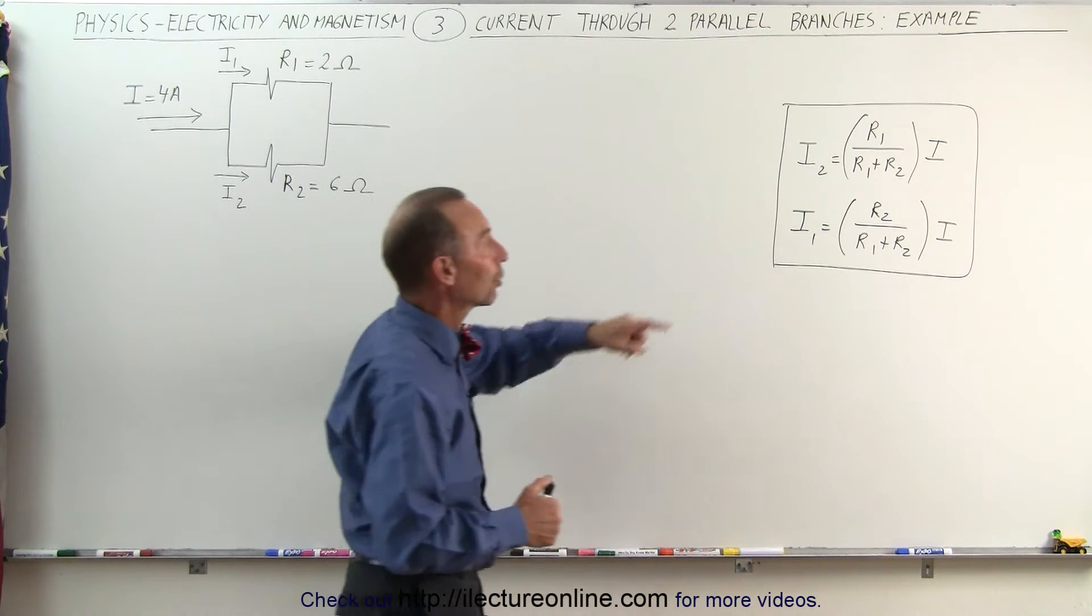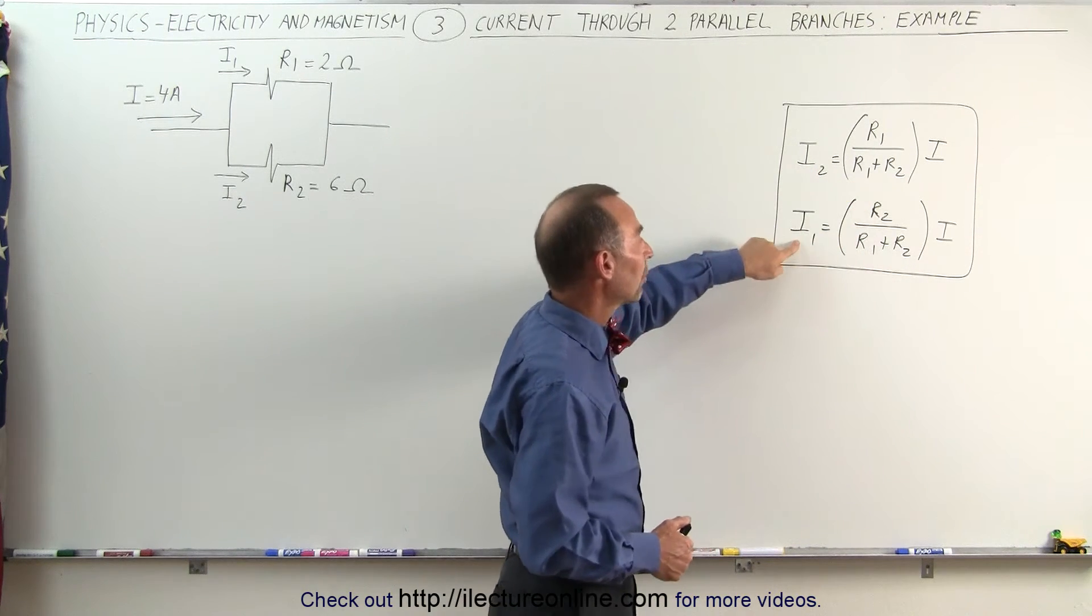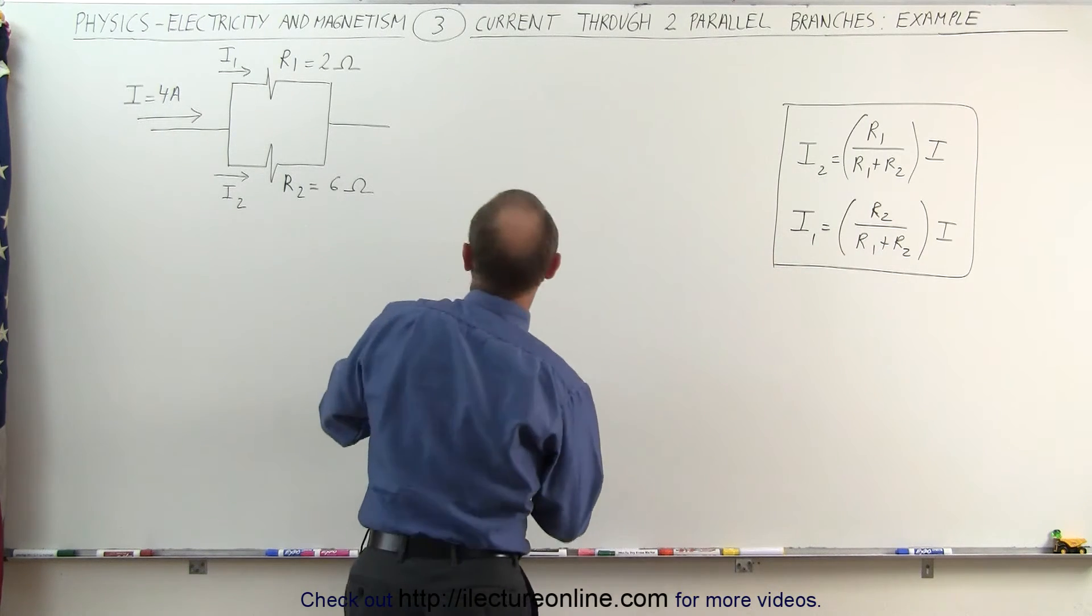From the last video, we saw that the current in the bottom branch can be calculated like this, and the current in the top branch can be calculated like that. So let's use that equation and see what we get.